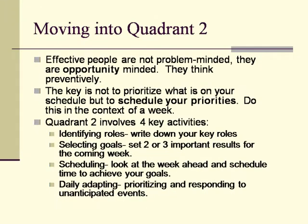Quadrant two involves four key activities — the next holy grail. You need to identify your roles in life, and I'll go through a practice exercise on this. Once you identify your roles in life, you then select the goals — that is, two or three important results that you want to work on in the next week related to your roles in life.